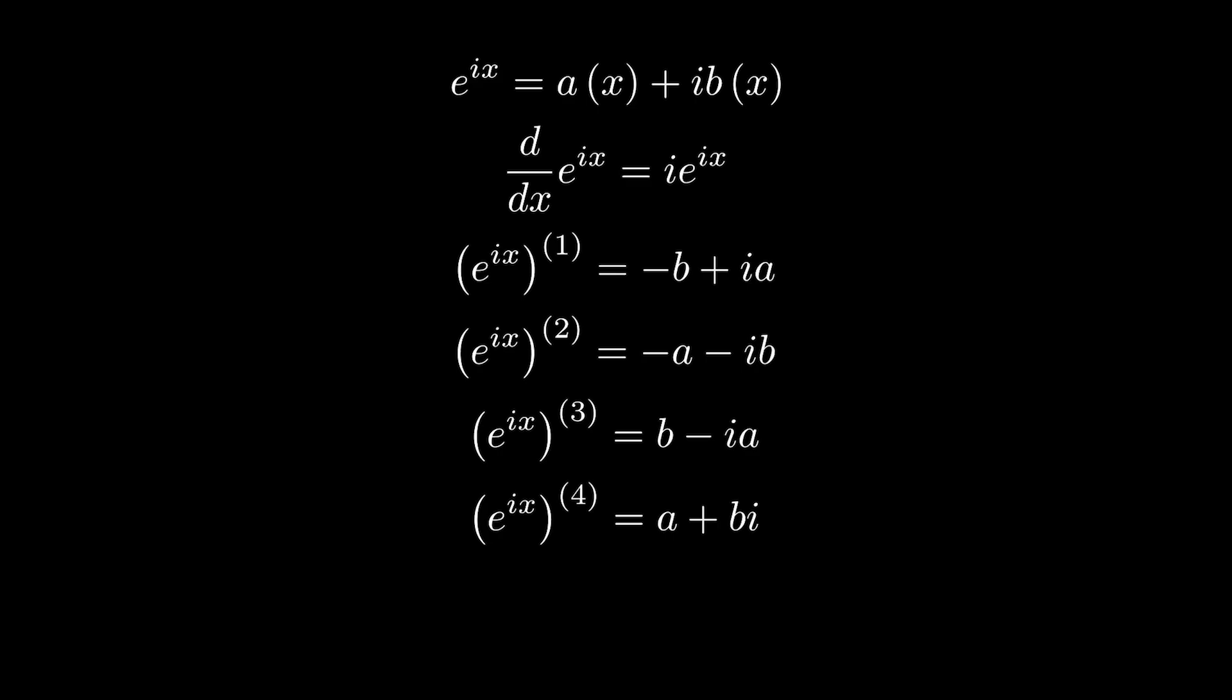For starters, we know that as we take derivatives of a, it becomes -b, then -a, then b, and then back to a. And then for derivatives of b, it becomes a, then -b, then -a, then back to b. Now you may notice that the two functions that obey these relationships are actually cosine and sine for a and b respectively. The derivative of sine is cosine, and the derivative of cosine is negative sine, so these two functions can plug right in and work perfectly.